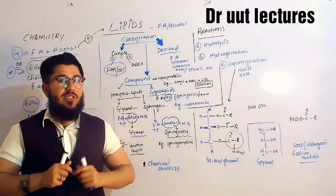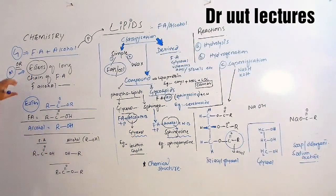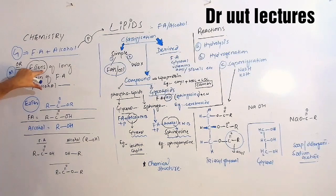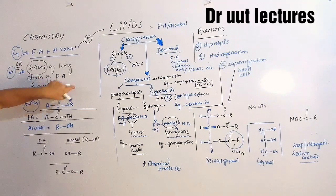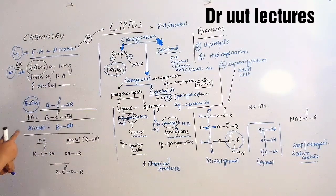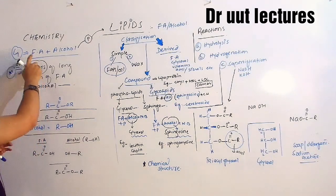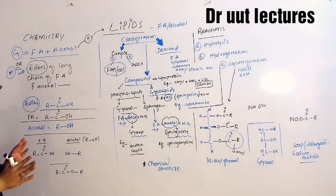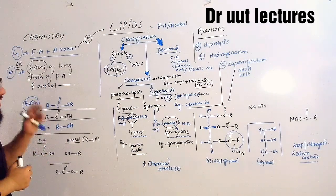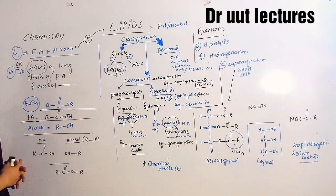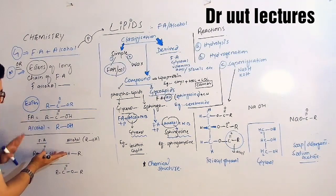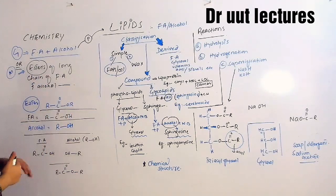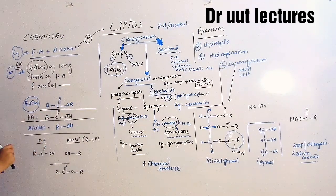Let's move towards another chemistry that is a little bit modified. This is a modified definition: esters of long chain fatty acid and alcohol are also known as lipids. You must know about esters, you must know about the structure of fatty acid, alcohol, and esters — then it will be very easy to understand the chemistry of lipids and the rest of the lecture. So let's go towards the structure, then we'll come back to our definition and move forward towards classification and reactions.